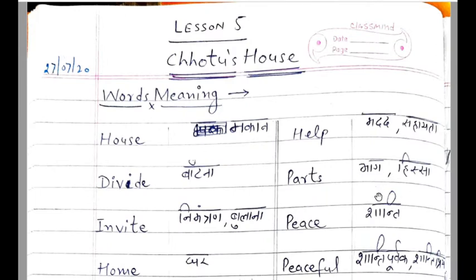Good morning students. Our today's topic is word meanings of lesson number five, that is Chotu's House. Chotu's House ke word meaning.